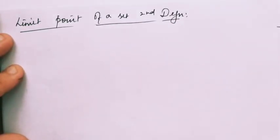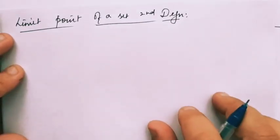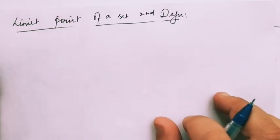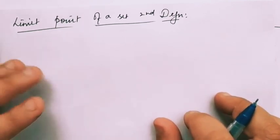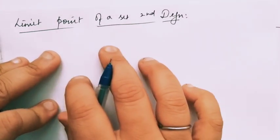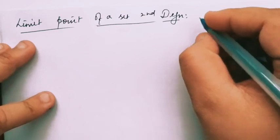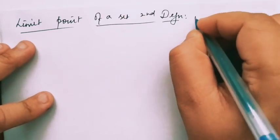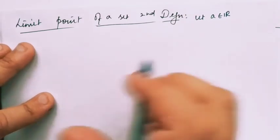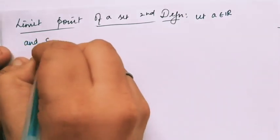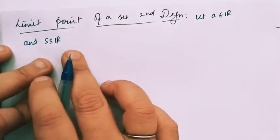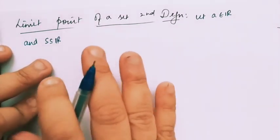Now we will look at another definition of the limit point of a set. We have understood one definition, and now we need to understand the second definition as well. Let A be a real number and S is a subset of R, real numbers. S is a subset of R and A belongs to R.